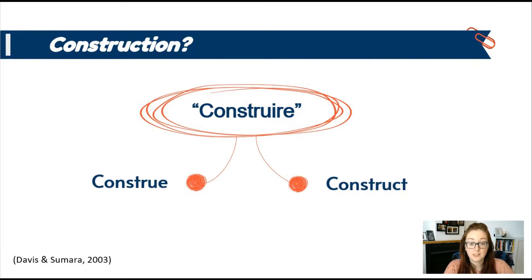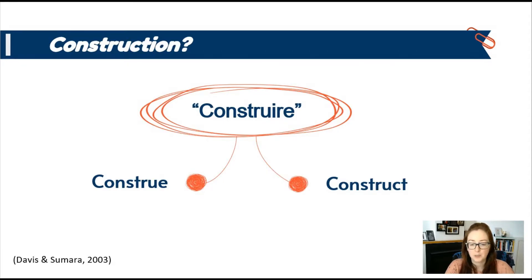So when Piaget's work was translated, something was lost in translation when we picked construct, because this turns our attention to more deliberate, explicit, and optimal. Whereas the word construe may have turned our attention more towards the contingent, the tacit, the adequate. The word construe implies more of interpretation and meaning-making, which is much more aligned with what Piaget was trying to get at. This issue of translation leads to a lot of misinterpretations of Piaget's work.